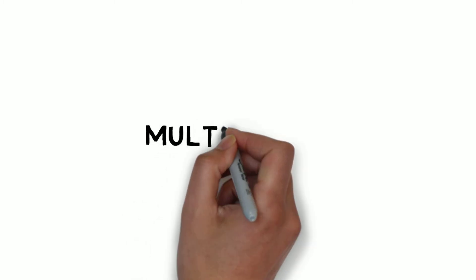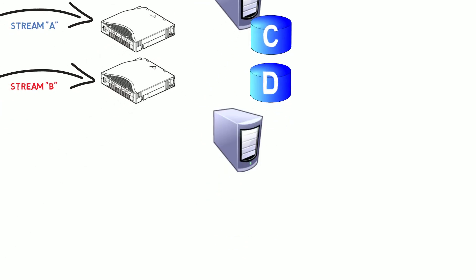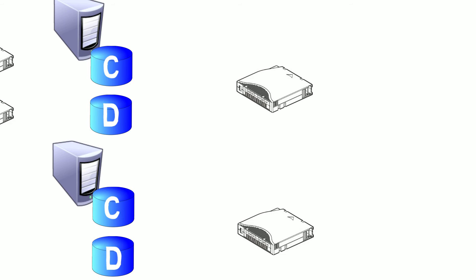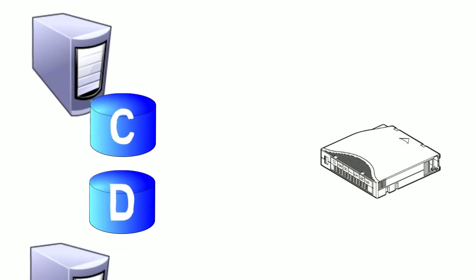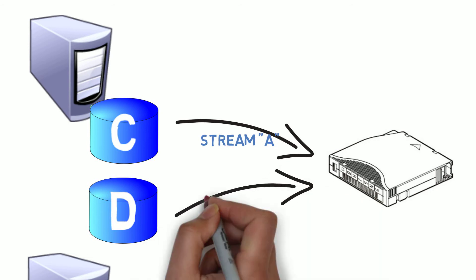Now that we have that concept down, let's build upon that with multiplexing. Multiplexing allows you to stream multiple drives or machines to a single tape drive. In this scenario, maybe you have the same Windows server with drive C and drive D, plus some other systems with multiple drives to protect. Without multiplexing and multiple streams, you can only backup any two drives at a time if you only have two tape drives. With multiplexing, you could stream all your drives to one or two tape drives, and that would look something like this.